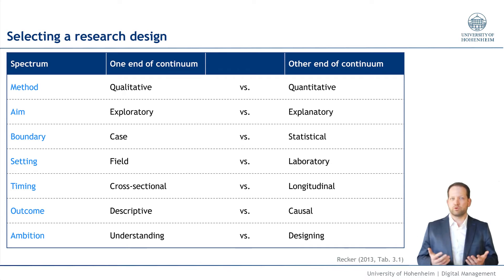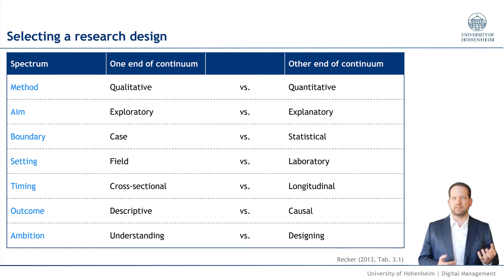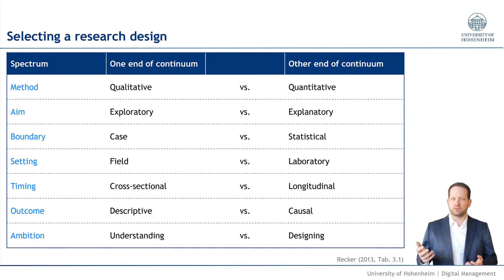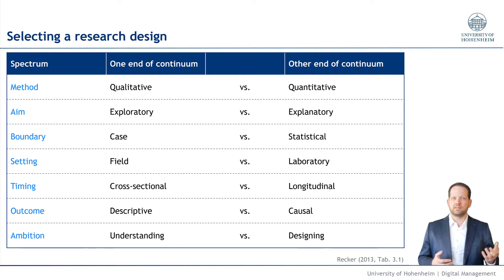The next thing is the boundary of a research design. One would be the case — you look at the individual case in depth and the data set there. On the other end of the continuum, you have the statistical approach, where you have lots of data of different cases or one case over time and you do statistical analysis on that. The next dimension is the setting: either in the field, out there in the wild, or in the laboratory in a rather controlled setting.